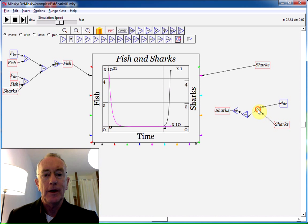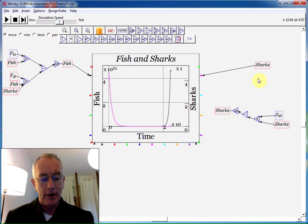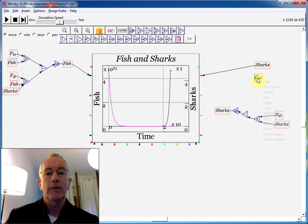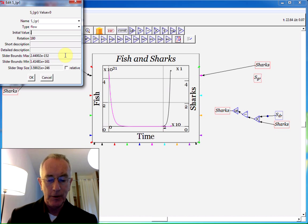So I now need to add in the fact that they have a positive interaction from eating fish. So I now have S underscore GR for growth rate, and flip that around. Give it a value of say 0.01.